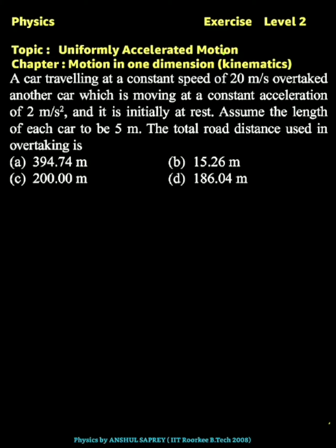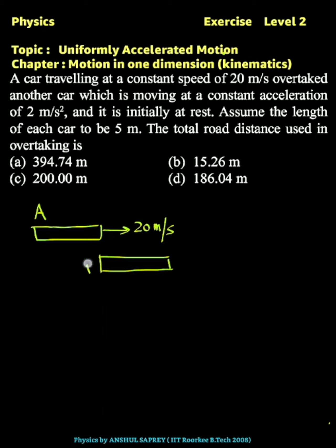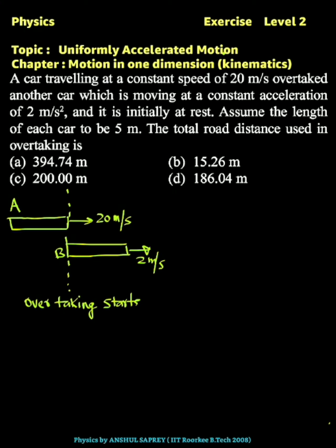A car traveling at a constant speed of 20 meters per second overtakes another car moving with constant acceleration of 2 meters per second squared, initially at rest. When overtaking starts, car A moving with constant velocity will be behind car B which is accelerating. Car A is aligned with the back of car B at the start, and when overtaking finishes, car A will be ahead of car B.